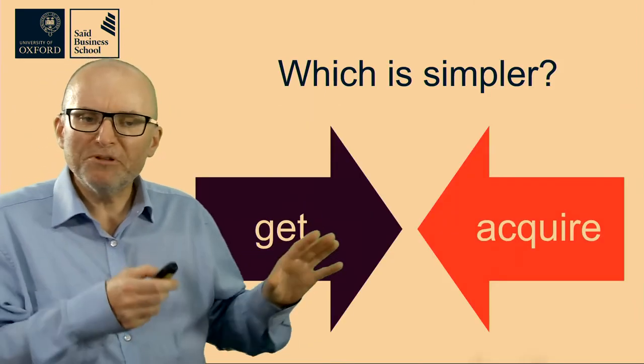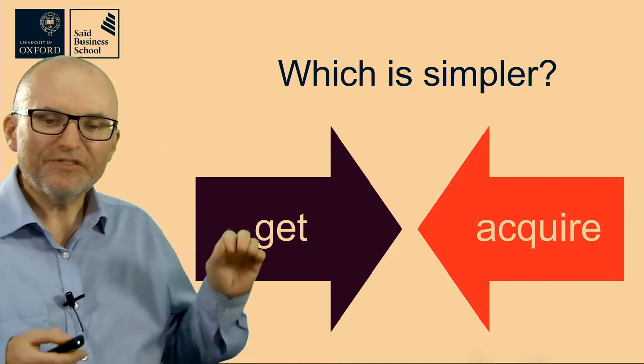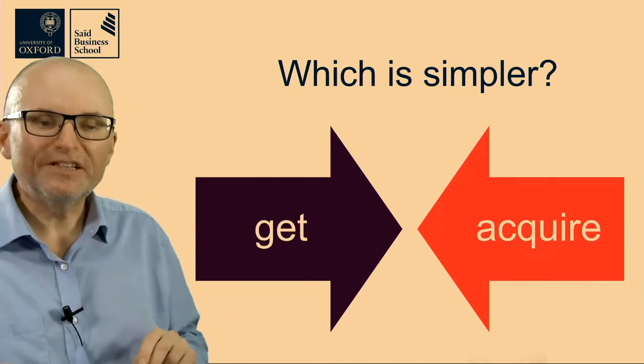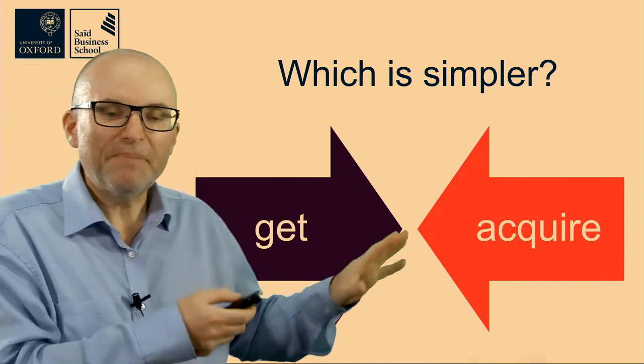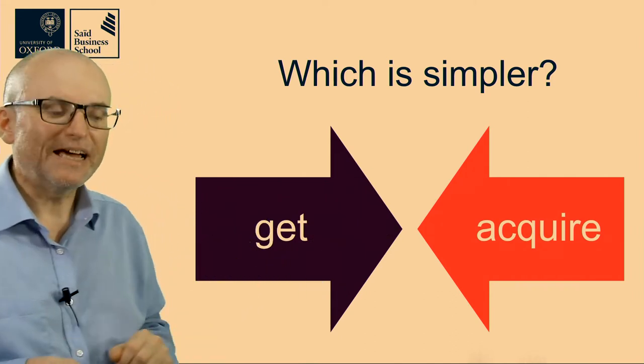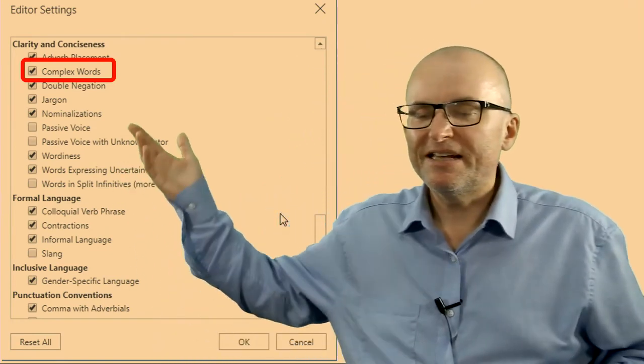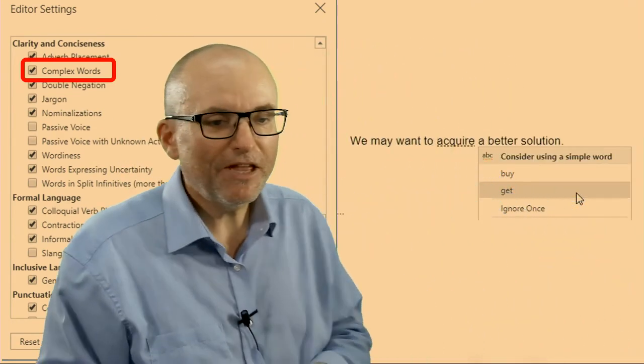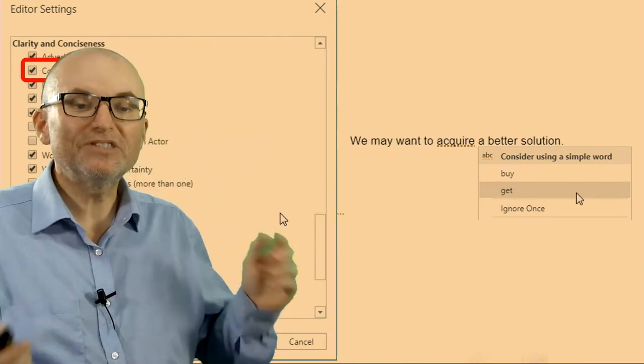Another example of simple word advice and short word advice that doesn't always work well is the difference between short typical old English words and their Latinate companions. If I ask you which one of these is simpler, you would of course say 'get' is simpler. And if I use Microsoft Word, I can ask for it to mark complex words and it will actually mark 'acquire' as a complex word and suggest 'get' as one of the alternatives that is not as complex.